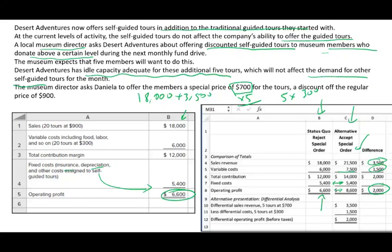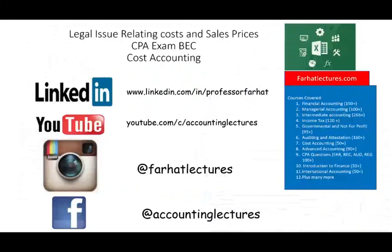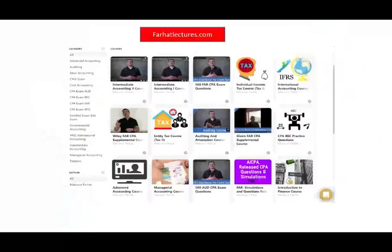An alternative way to compute this: five tours at $700 gives $3,500 additional revenue, and the only cost increase is five tours at $300 variable cost, equaling $1,500. Overall, we are $2,000 better off, so we accept. In the next session, we will look at legal issues relating to cost and sales prices. If you liked this recording, please like it and share it. Don't forget to visit my website, farhatlectures.com. Study hard, good luck, and stay safe.